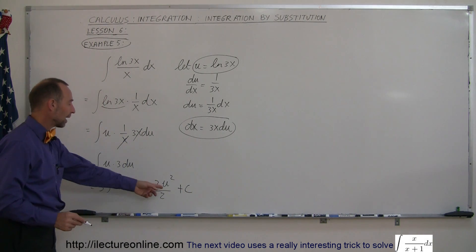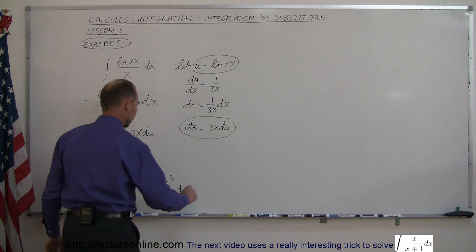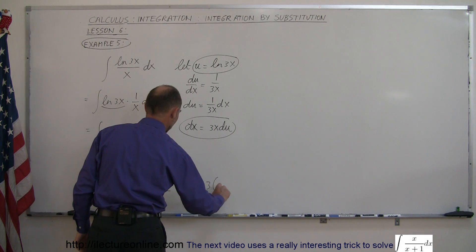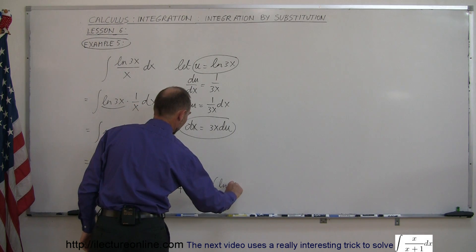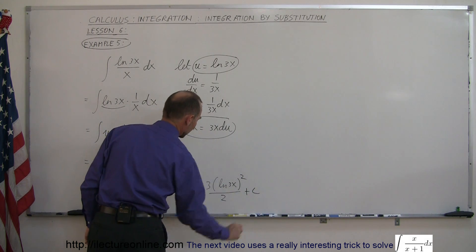And finally, replace back for u what u is equal to, which was the natural log of 3x. So this is equal to 3 times the natural log of 3x, quantity squared, divided by 2, plus a constant of integration.